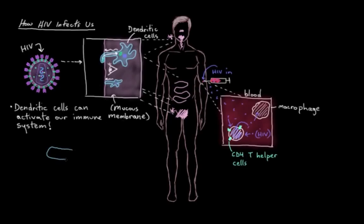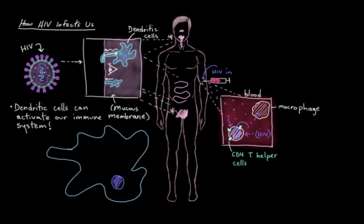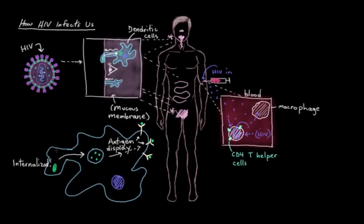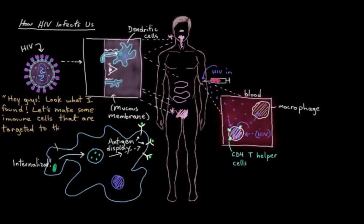In a normal scenario, if they find something they're worried about — maybe a virus or bacteria — they internalize it, then cut it up into a few pieces, and display little pieces of it on their surface. At this point these are called antigens, because essentially they want to get other immune cells' attention. They're essentially saying, 'Hey guys, look what I found — let's make some immune cells targeted to these pieces here. Let's wipe this thing out.'